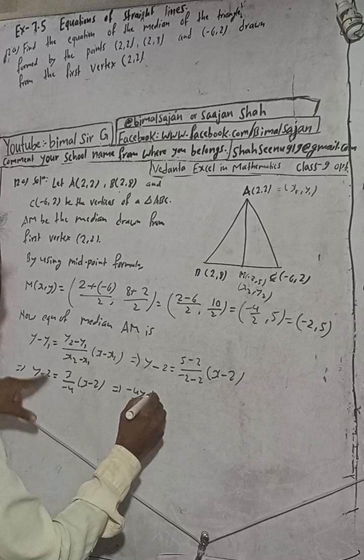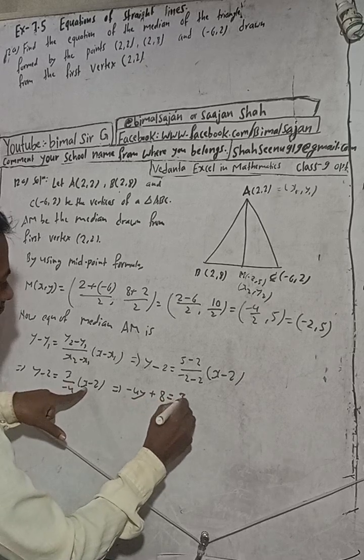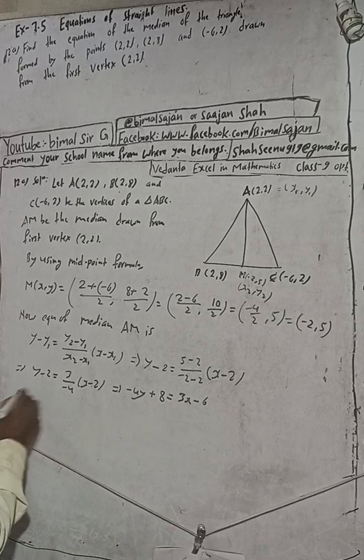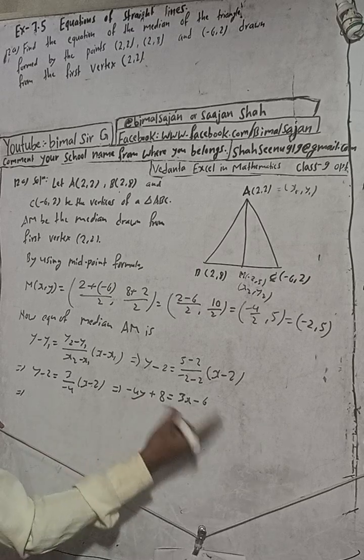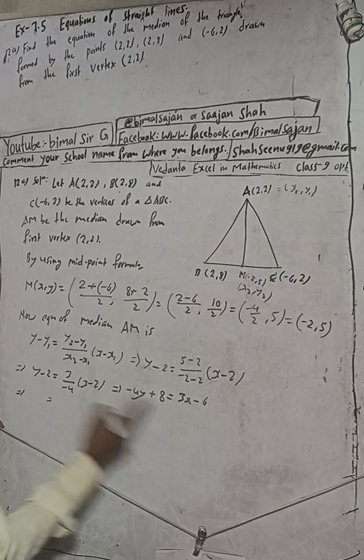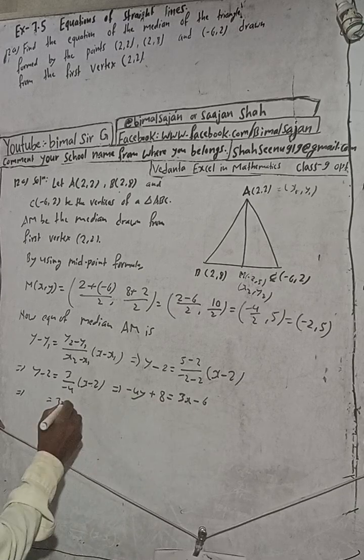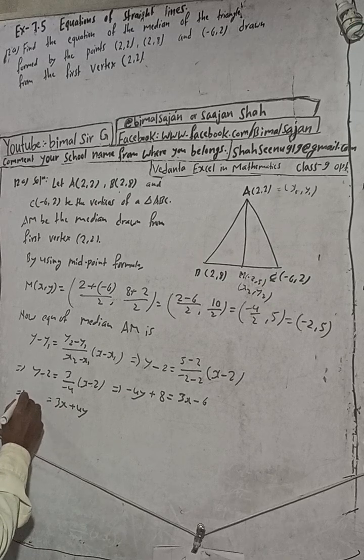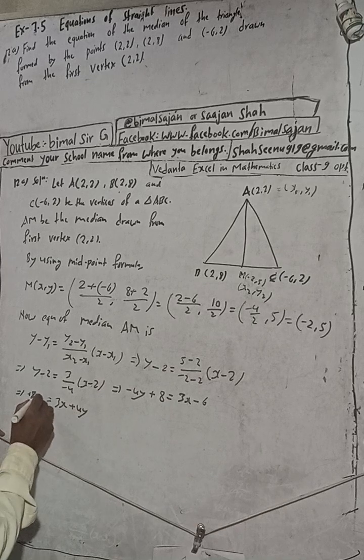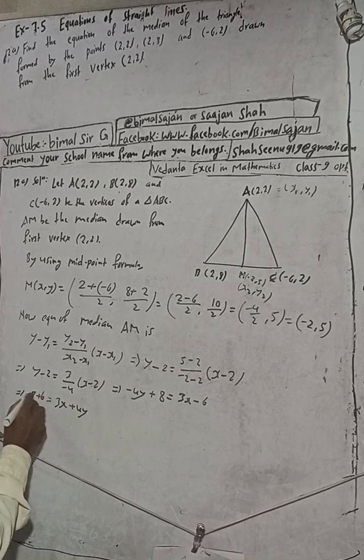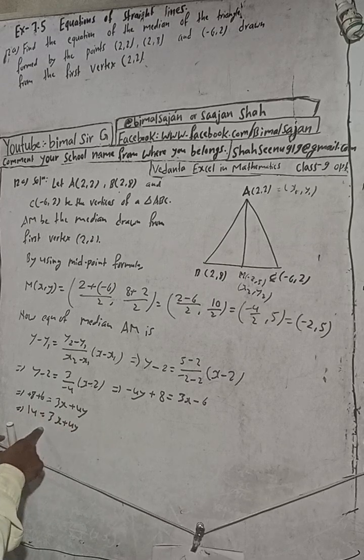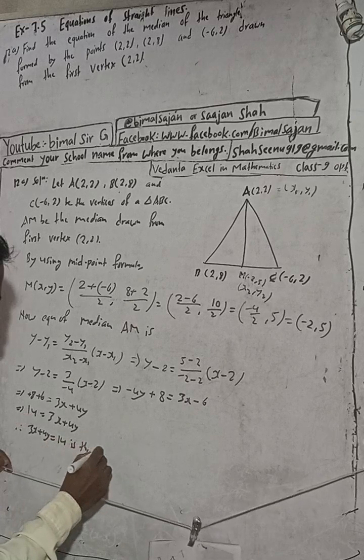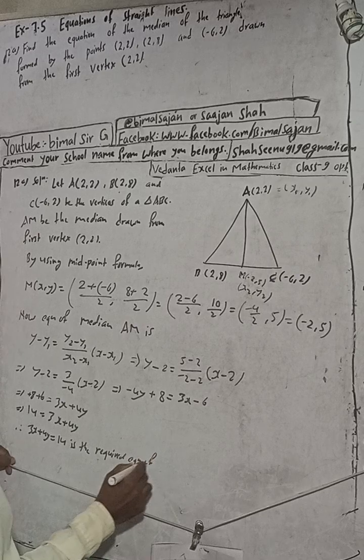y minus 2 is equal to 3/(-4) times (x minus 2). So 3x minus 4y plus 8 minus 6 equals zero. This simplifies to 3x plus 4y equals 14. This is the required equation of the median.